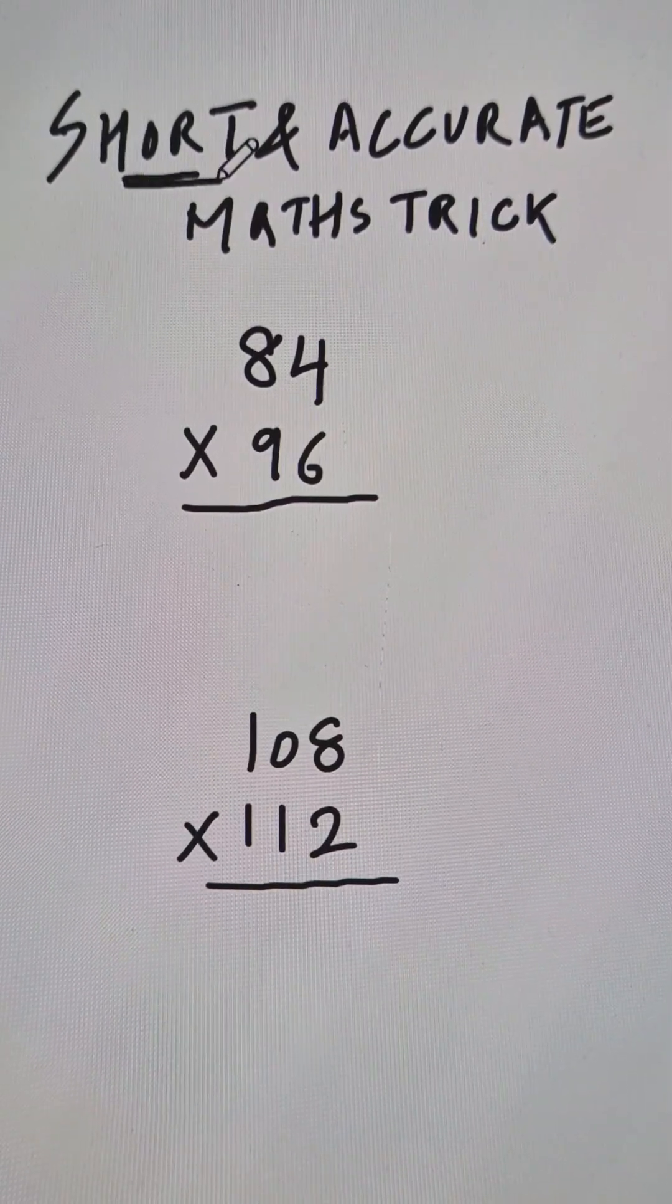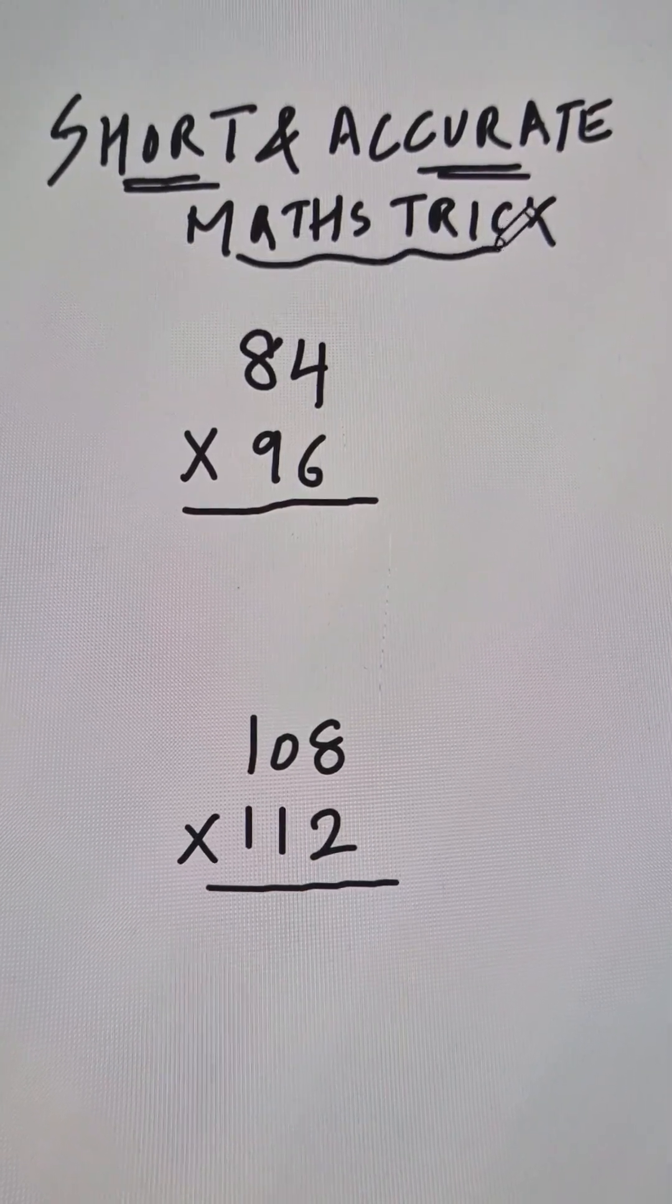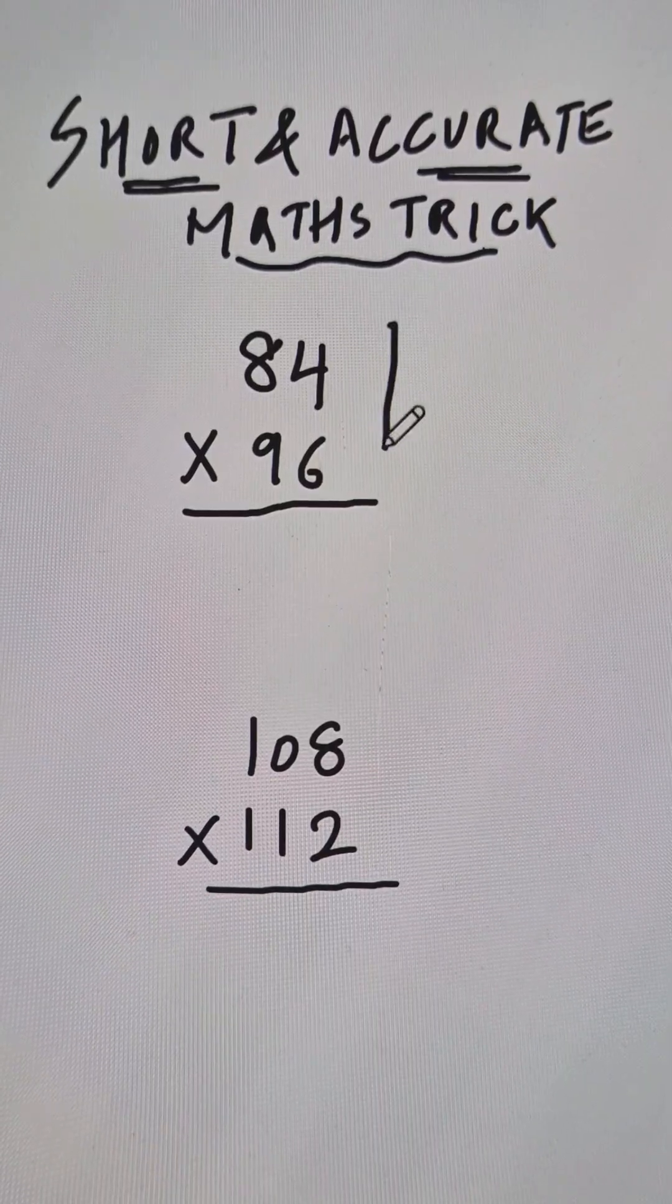Here is a very short and accurate mathematics trick. Let's multiply 84 and 96.